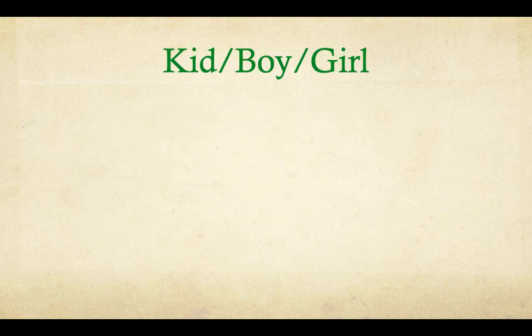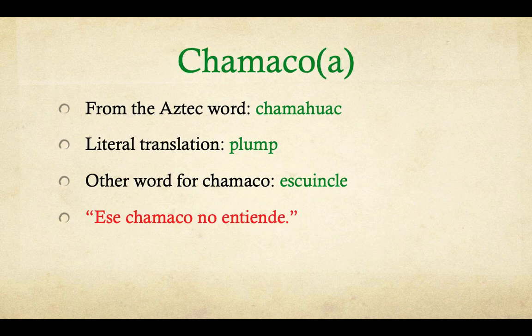Kid, boy, or girl. Do you know what they would call a kid in Mexico? 'Chamaco,' or 'chamaca' for a girl. It comes from the Aztec word 'chamahuac' and the translation is 'plump.' Another synonym for chamaco is 'escuincle,' which means 'squirt' — like, hey, come here you little squirt. Example sentence: 'Ese chamaco no entiende.'